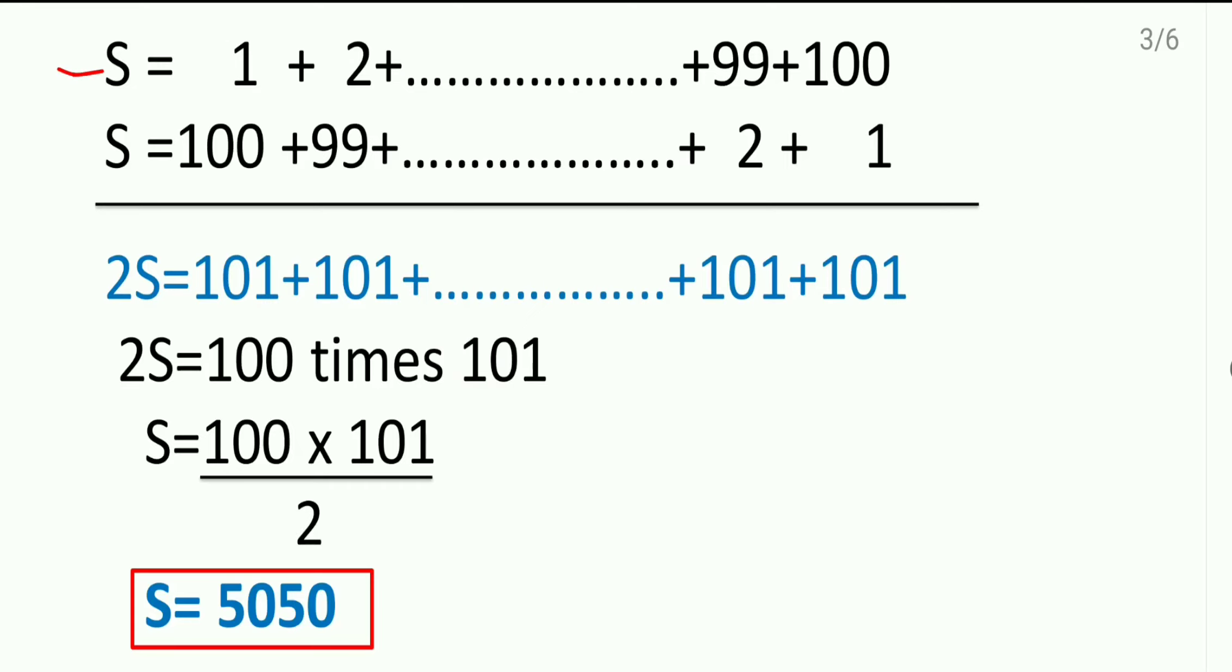In the second case, he has taken the same numbers but just in the reverse order. 100 plus 99 and so on. And at the end, he has written 1.